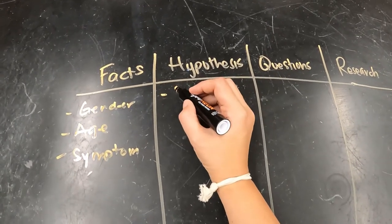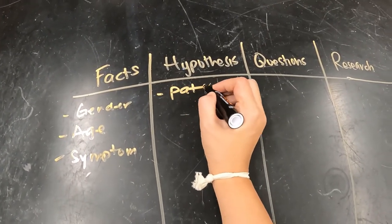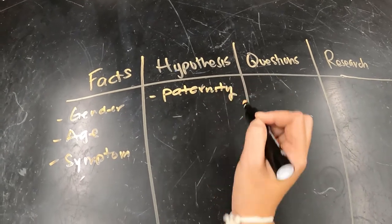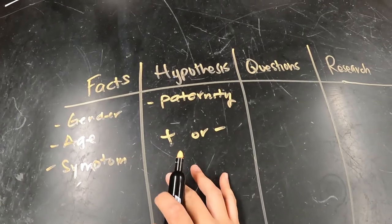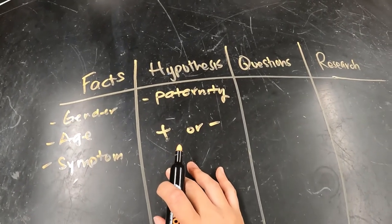In this particular case, they're also going to be looking at the father, so paternity, based off the blood types. And that's where they're going to be able to either support or refute their hypotheses with additional data that they're going to be getting through the blood typing.